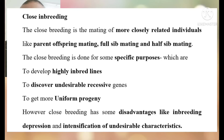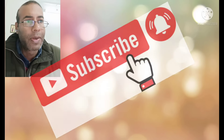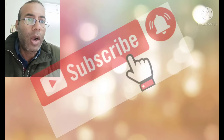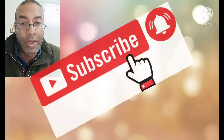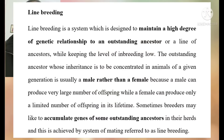Now I will discuss the concept of line breeding, which is very important. Sometimes breeders may wish to accumulate genes of some outstanding ancestors in their herd, and this is achieved by the system of mating referred to as line breeding. Line breeding is a system designed to maintain a high degree of genetic relationship to an outstanding ancestor while keeping the level of inbreeding low.